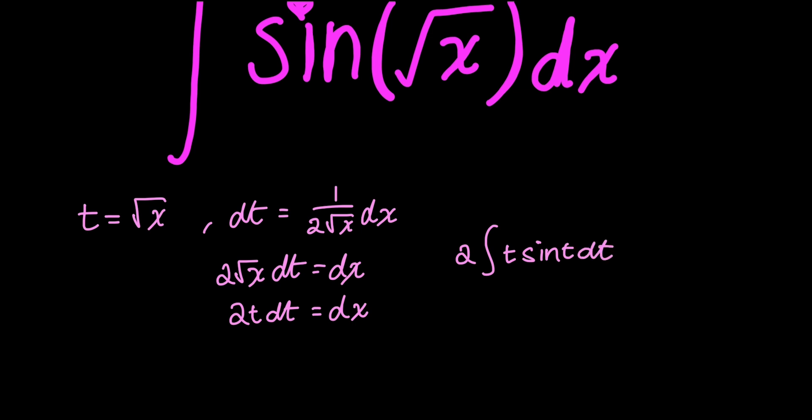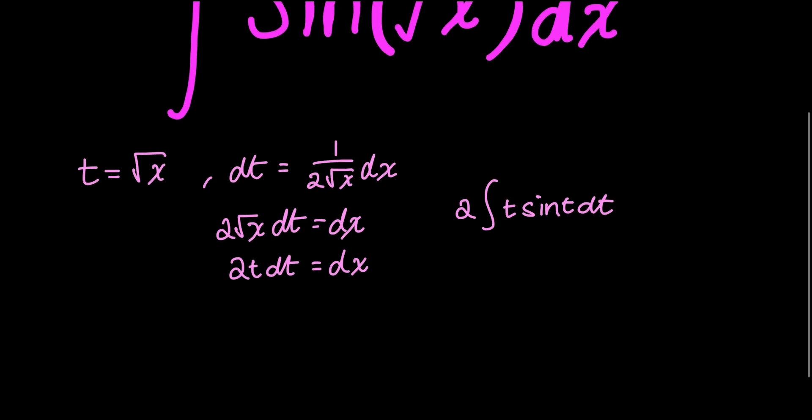Now what? I can't integrate this simply. I have to apply another integration method to continue solving this. The integration method that I will use now is integration by parts, because I have 2 parts: this t and this trigonometric function. So integration by parts is the most logical way to approach this.